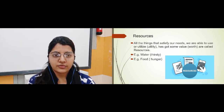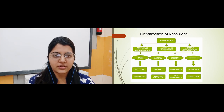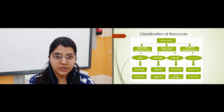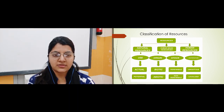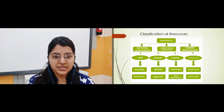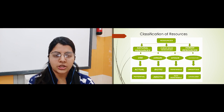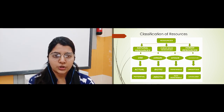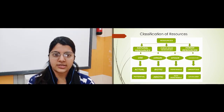Now we will study a detailed classification of resources. Under resources we have three parts: natural, human, and human-made. Under those three parts we have further classification. On the basis of use, we have two parts: actual resources and potential resources.